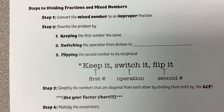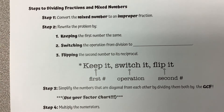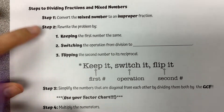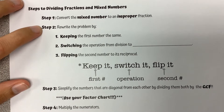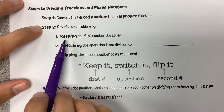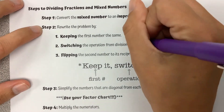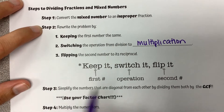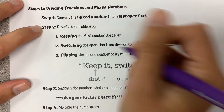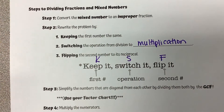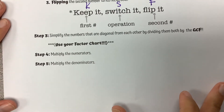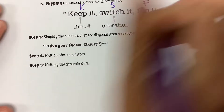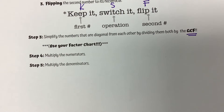So, the steps to dividing fractions and mixed numbers. First step: convert the mixed number to an improper fraction — that is really important, we have to do that first before we go into rewriting. When we rewrite it, we need to keep the first number the same, switch the operation from division to multiplication, and flip the second number to its reciprocal — or Keep it, Switch it, Flip it, which you'll see me writing as K, S, F. Then we simplify numbers that are diagonal from each other by dividing by the GCF, and finally multiply the numerators and multiply the denominators.